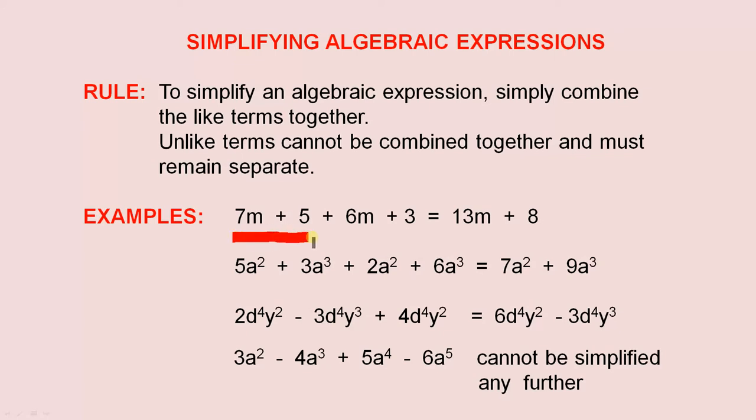In this expression here, you are allowed to add the 7m and the 6m to give you 13m. You can add the 5 and the 3 to give you 8. Note, we have just added the like terms only.